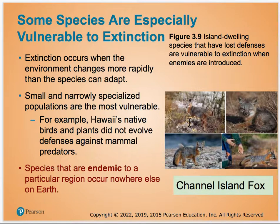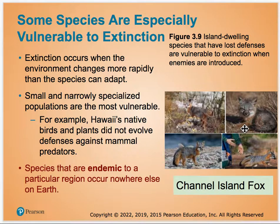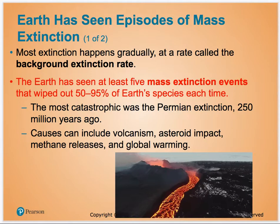Certain animals are more vulnerable to extinction. Animals that are endemic to an area are found in one place and nowhere else in the world. A Southern California example is the Channel Island fox — a very cute little fox found only on Catalina and the Channel Islands. Because it's endemic and has only ever lived there, it's more vulnerable to extinction than something widespread across the whole planet.